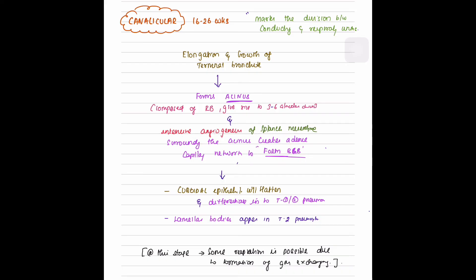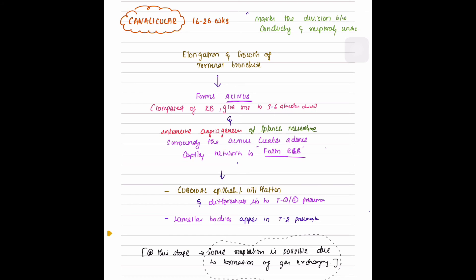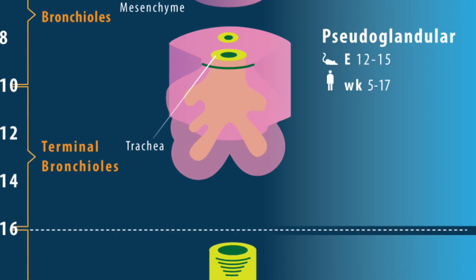The cuboidal epithelial cells flatten and differentiate into type 1 and type 2 pneumocytes. Lamellar bodies start appearing in type 2 pneumocytes. At the end of this stage, some respiration is possible due to the formation of a gas-exchanging area.